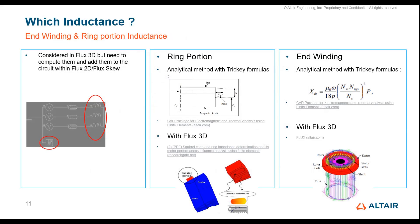In 2D there are other inductances to consider, mainly end winding inductances. For an induction machine there is ring portion impedance, and for the ring portion inductance there are some formulas — a tricky formula — which can be found in our tutorial for a skewed rotor example. It is also possible to determine it in Flux 3D; we published an article where we computed the impedance of the end ring portion using Flux 3D. For the end winding inductance, this formula is mainly what we use in Flux Motor, and there is also a possibility to compute it with Flux 3D with an available tutorial.